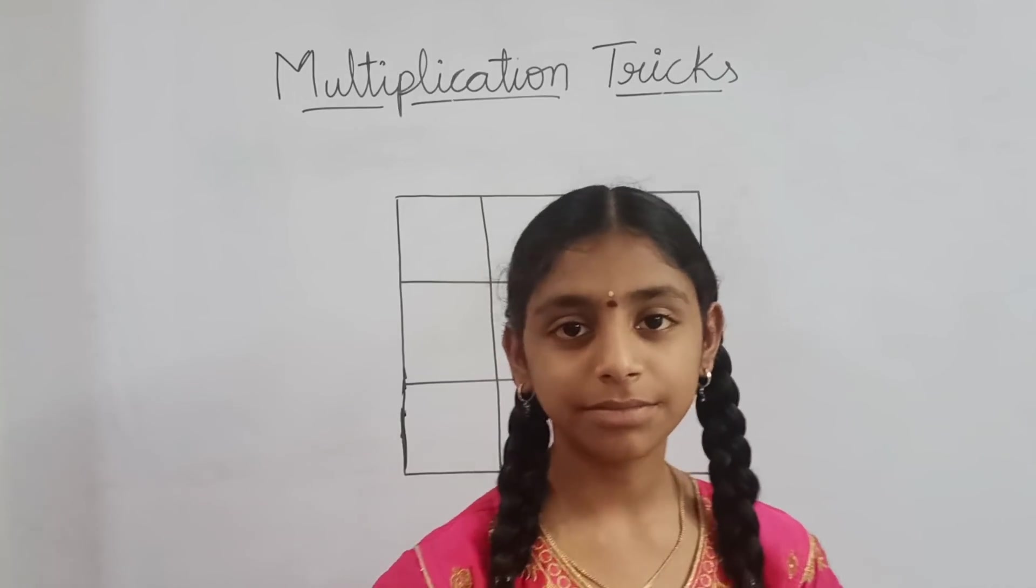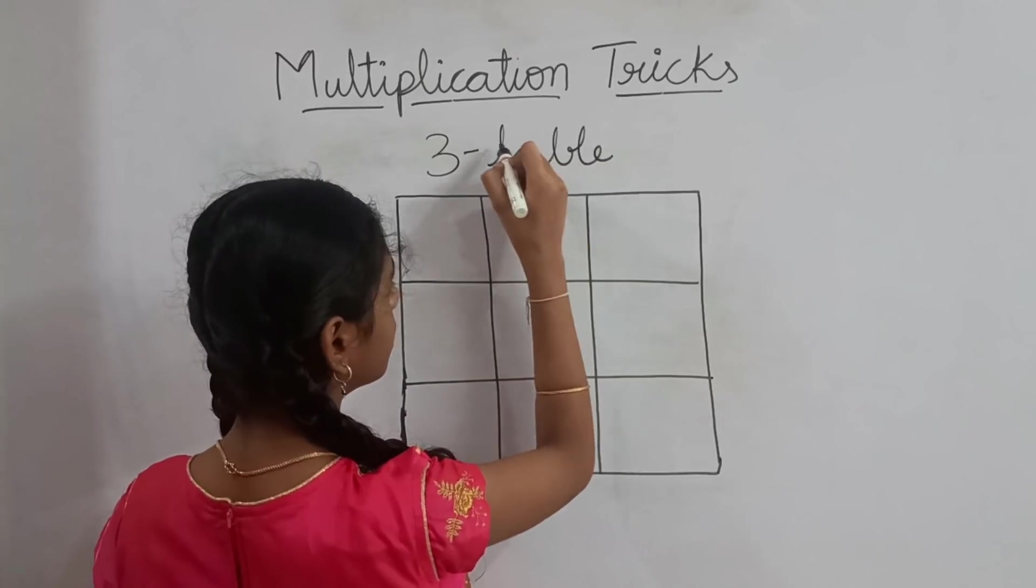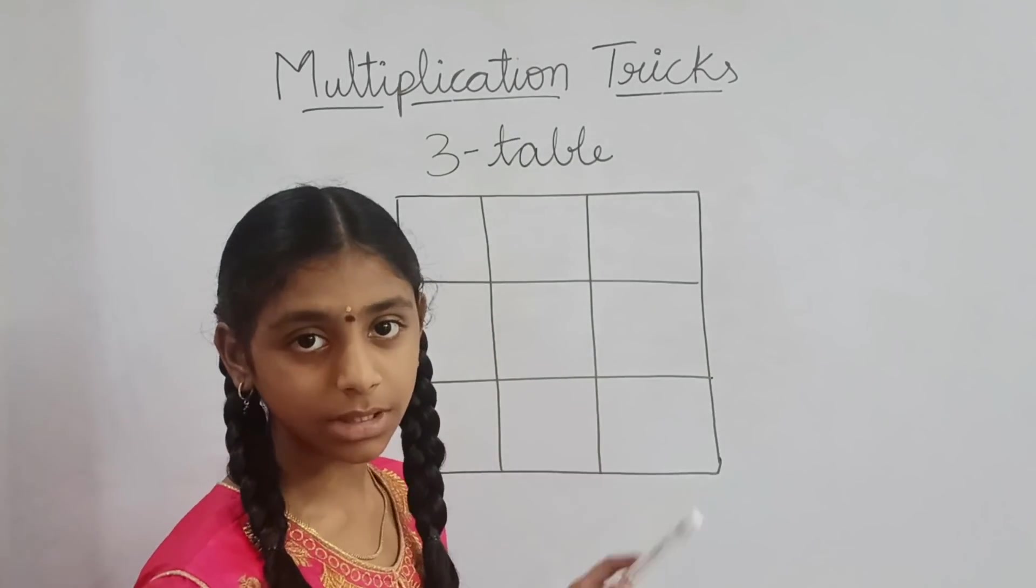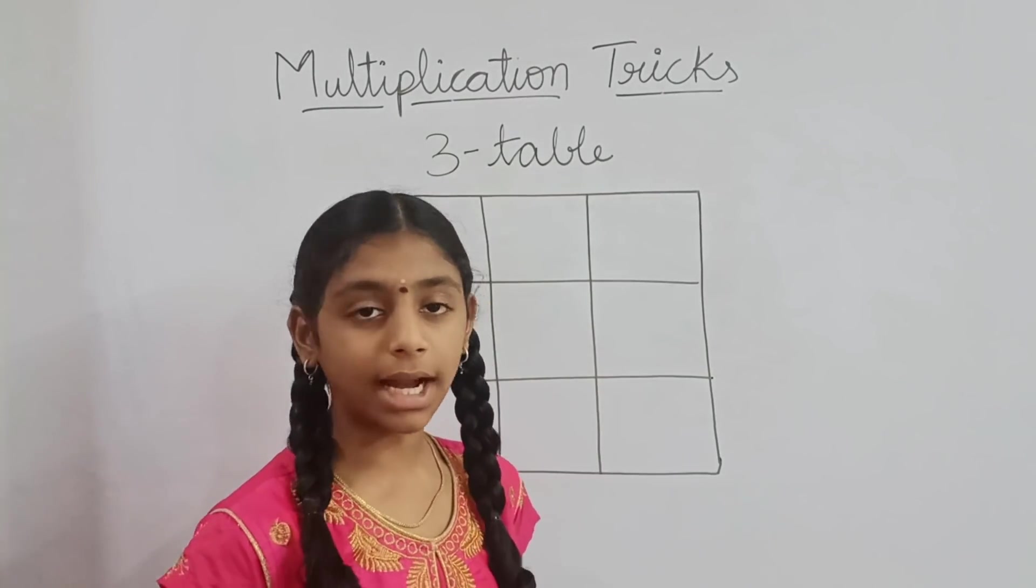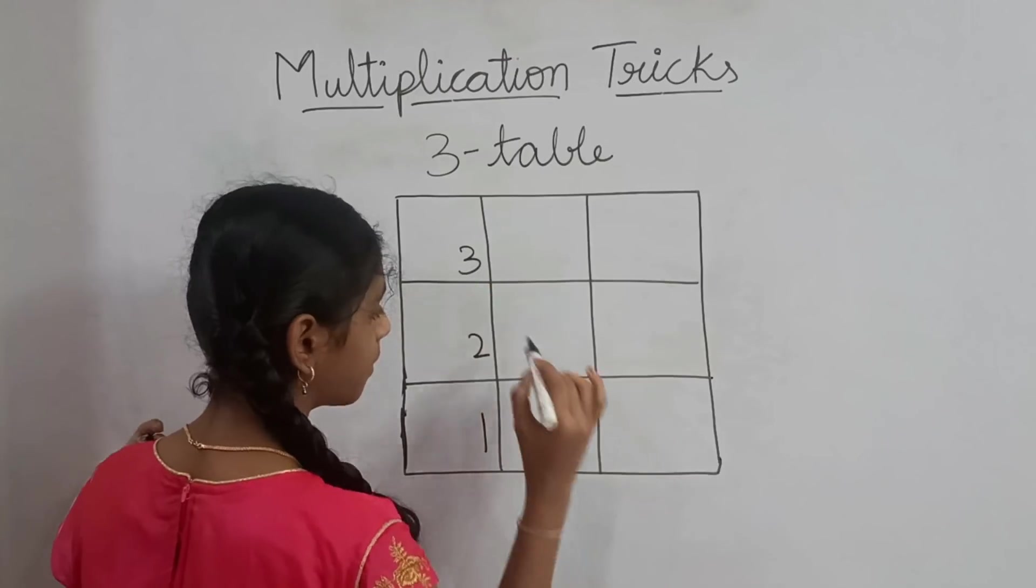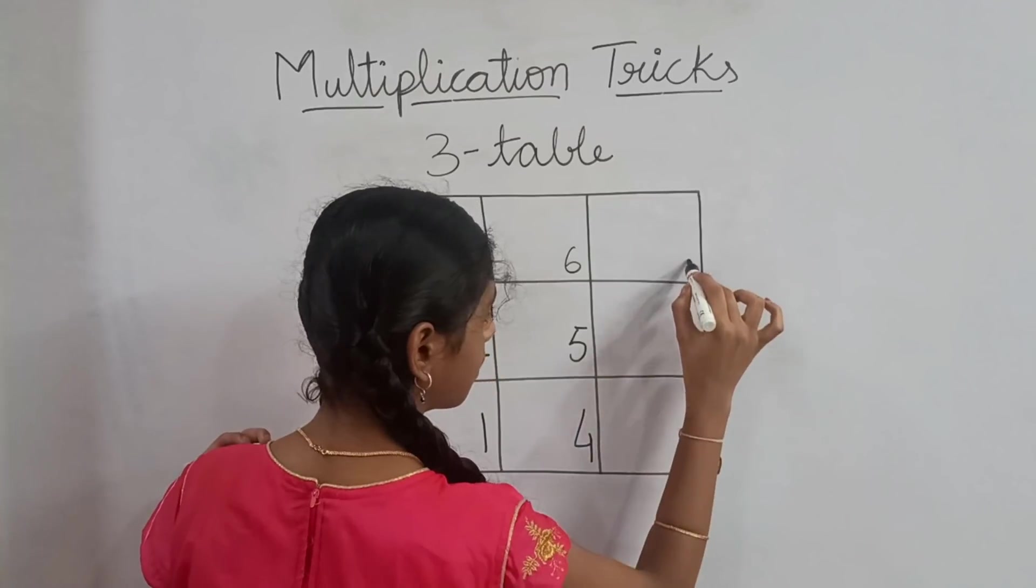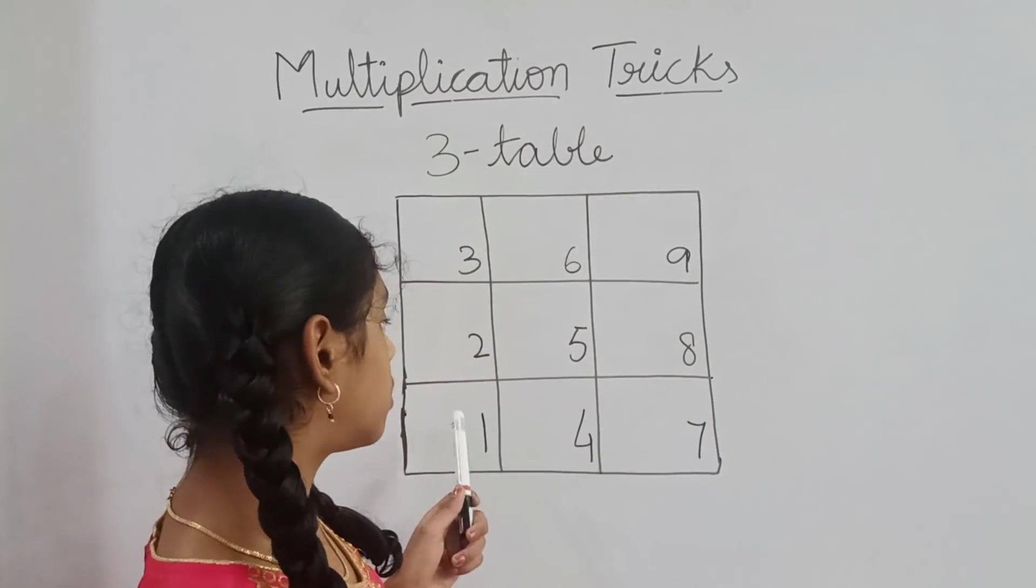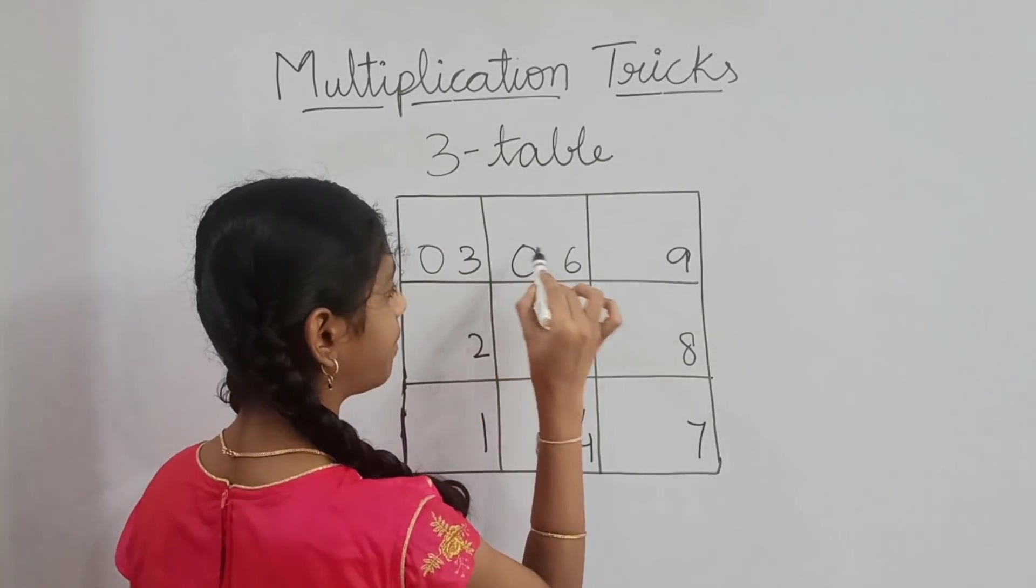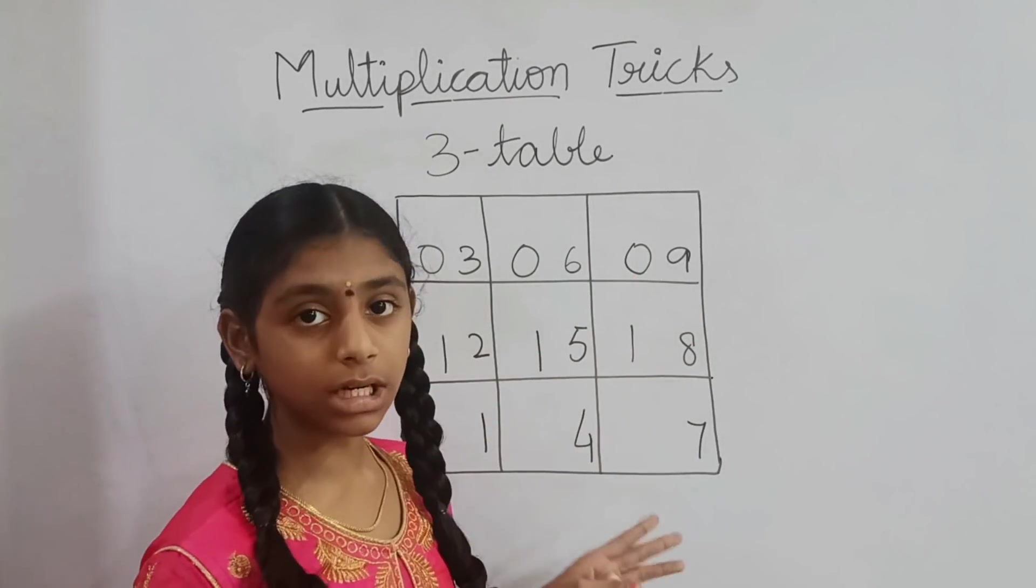I want to share the 3 table trick with you all. For this trick, we need a square grid containing 3 rows and 3 columns. Now shall we start. We will write 1 to 9 numbers in these corners. We will write 1 to 9 numbers like this. Now, here first row contains 0 and second row contains 1 and third row contains 2.